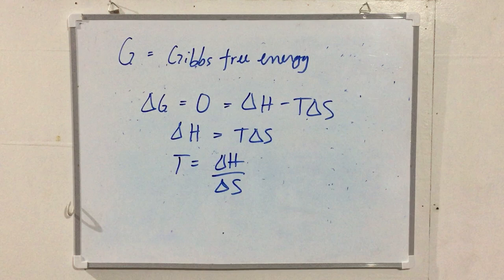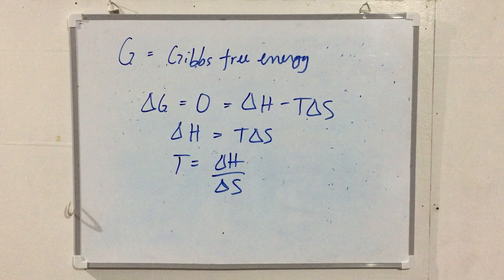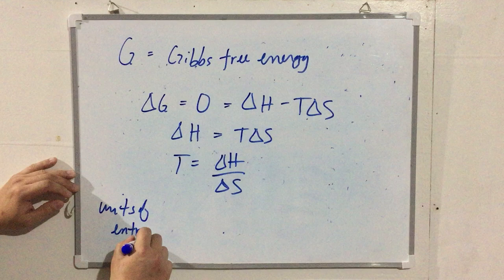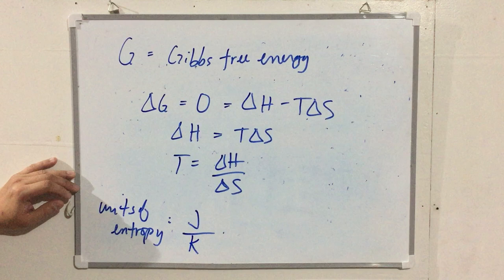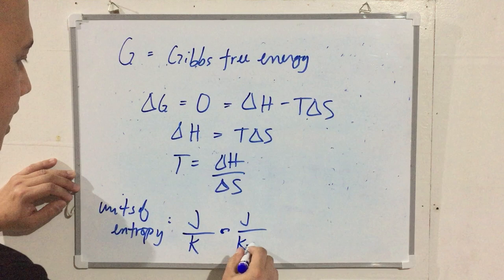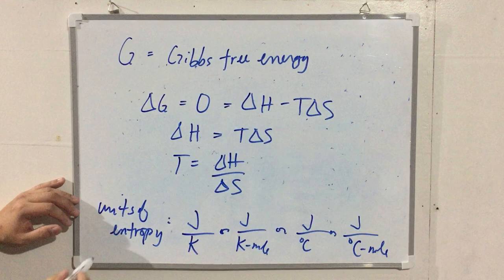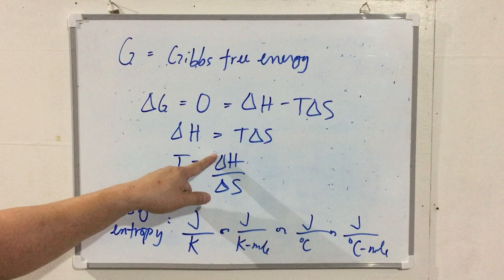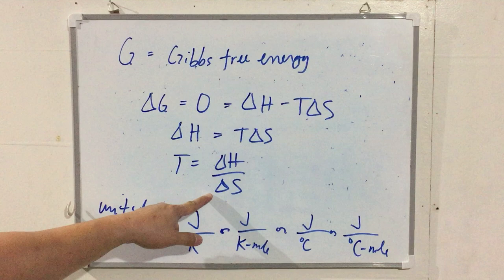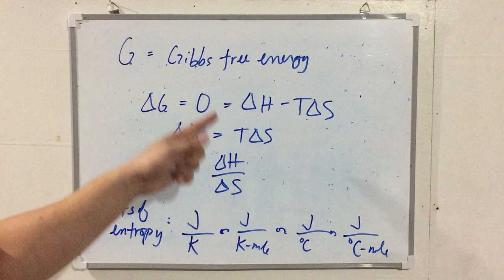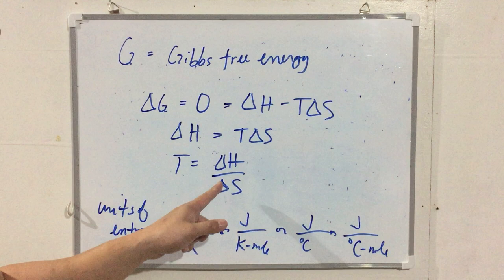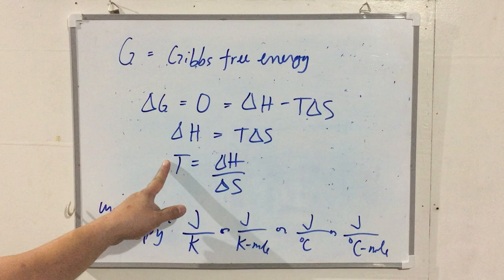The units of entropy are joules per kelvin (J/K), or joules per kelvin per mole (J/K·mol) for molar entropy. Sometimes joules per degree Celsius is used instead. When computing threshold temperature using T = ΔH / ΔS, note that ΔH is typically reported in kilojoules while ΔS is in joules, so you must convert units to be consistent before dividing.